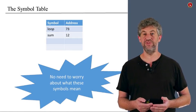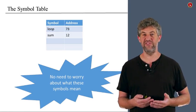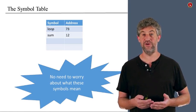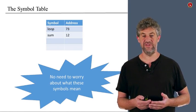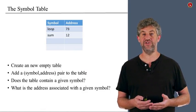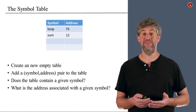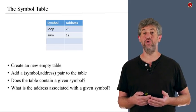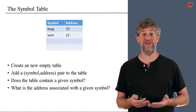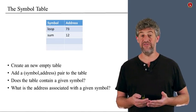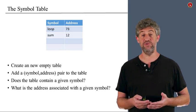Let us now move into the third part: the symbol table. The actual table keeps the association between symbol names and their addresses. The symbol table doesn't need to understand anything about machine language or assembly language or what the symbols mean. The only thing it needs to do is maintain the association between a symbol and a memory address. So the operations it must handle are: create a new empty symbol table, add a symbol-address pair to the table, look up whether a symbol exists in the table, and if so, retrieve its address. Most languages already have a class that does this kind of symbol table.